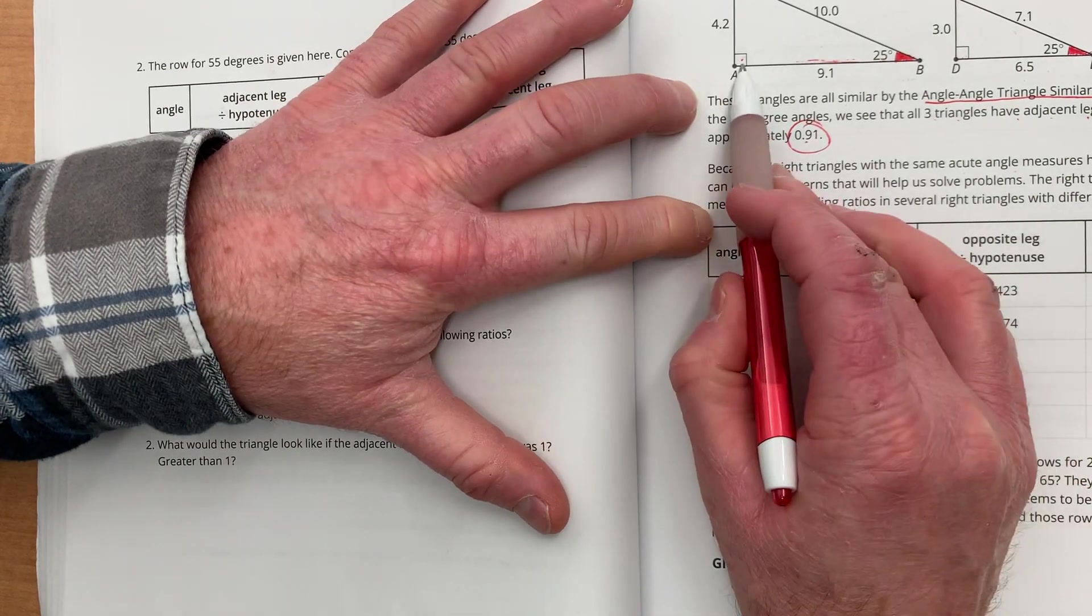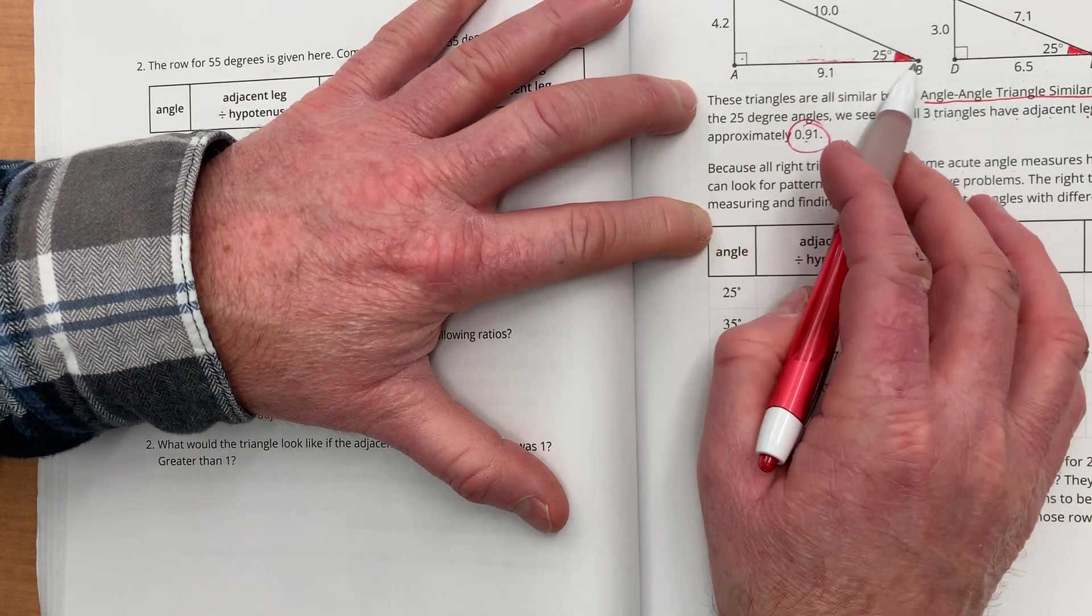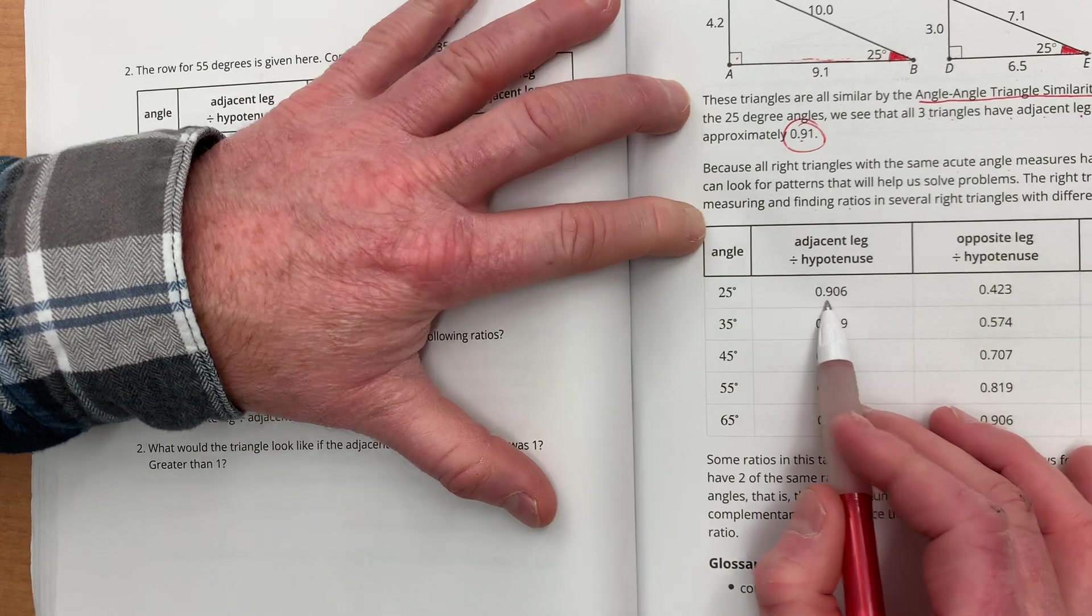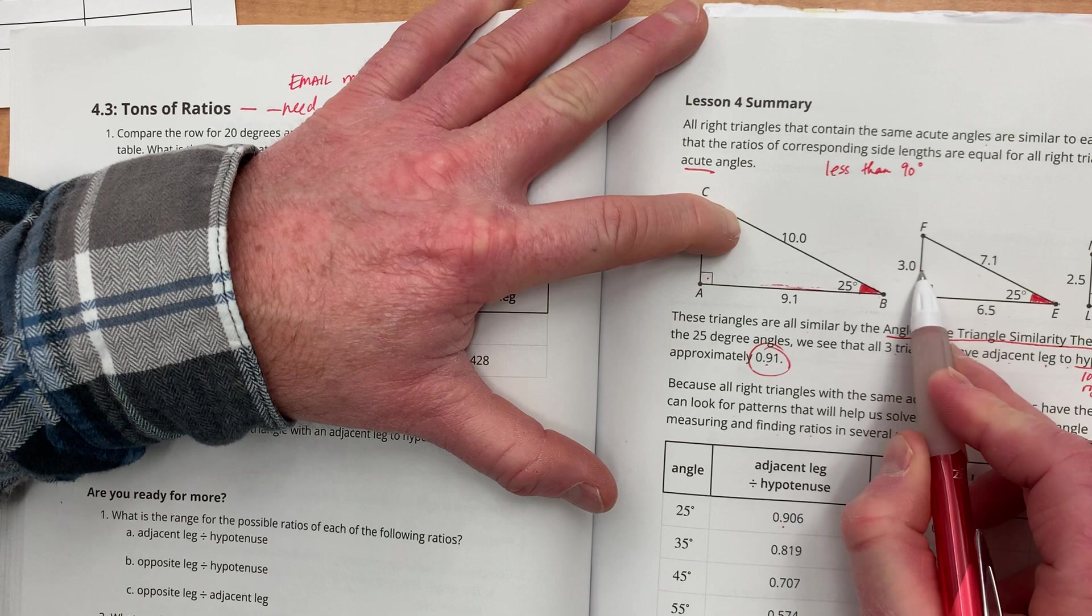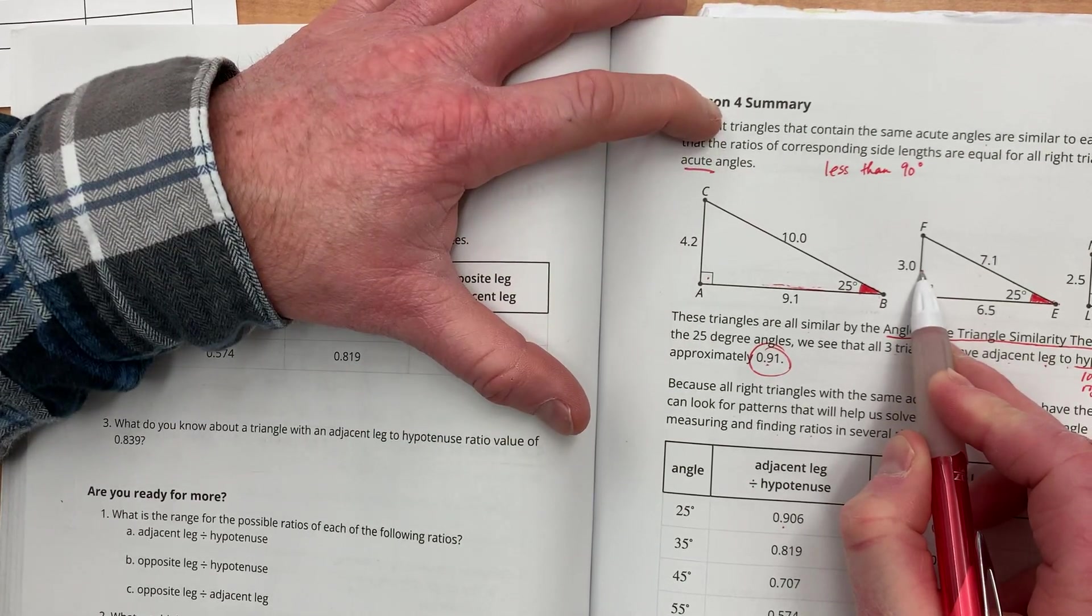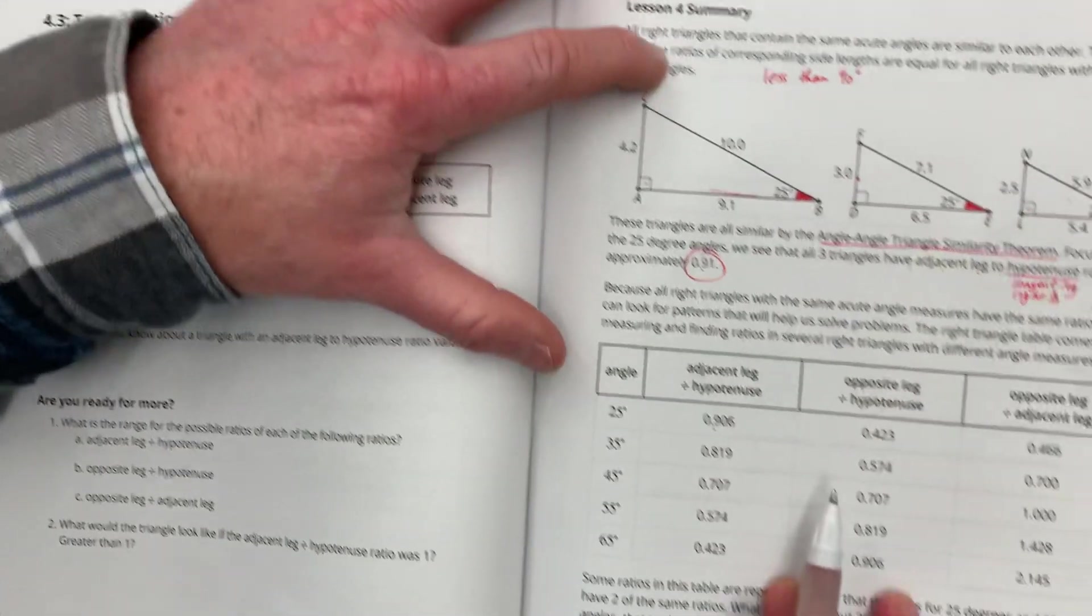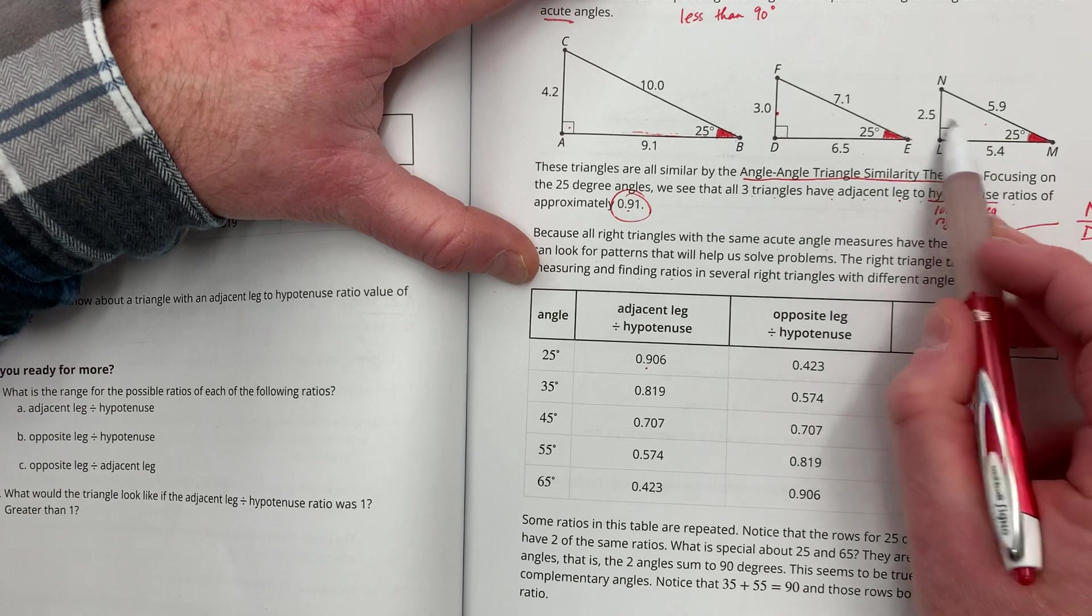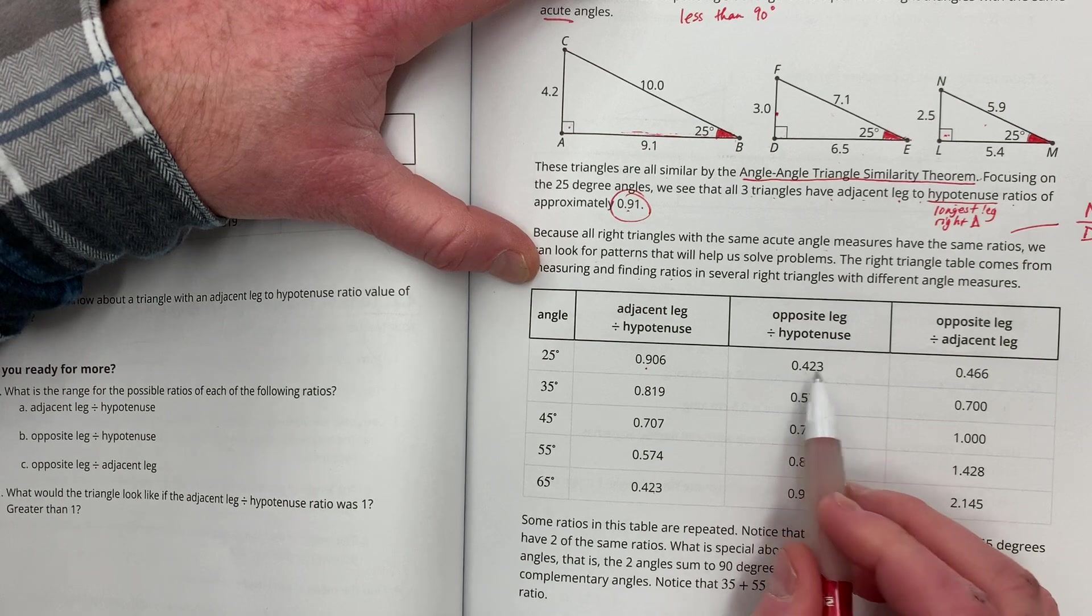...the adjacent leg, a.k.a. the one that's touching the angle, divided by the hypotenuse, the longest leg in any right triangle, will always be this number, this decimal. Now, the opposite in this case for the 25 is 3.0. So, the opposite leg divided by the hypotenuse will always equal 0.423. Same goes for this one. 2.5 divided by 5.9 will always equal 0.423.